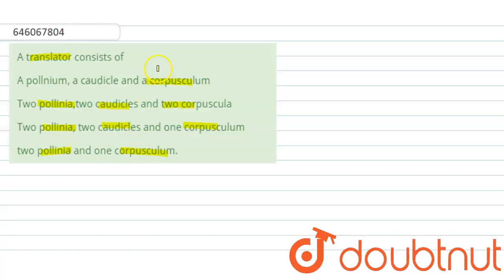Let's see what will be the correct answer. If we talk about the translator, so it is a special structure to get the unique type of pollination mechanism, unique type of pollination mechanism in Asclepiadaceae.